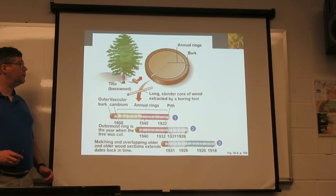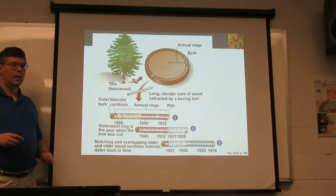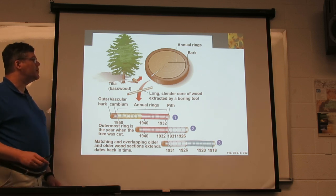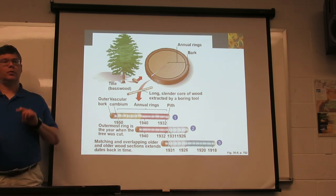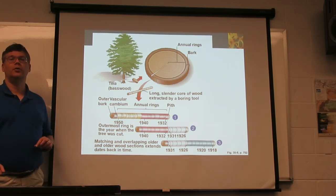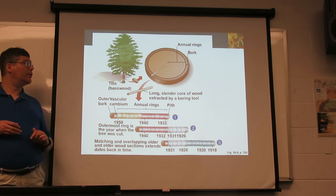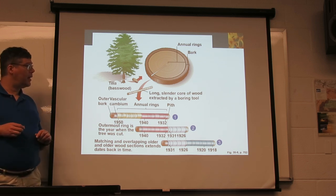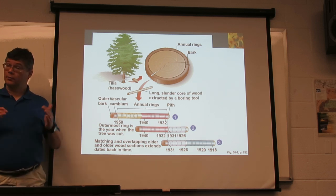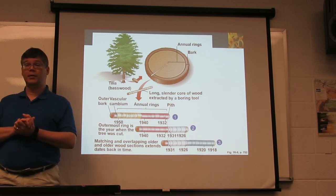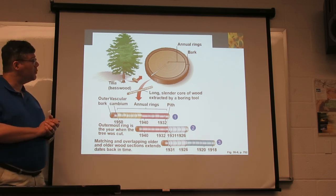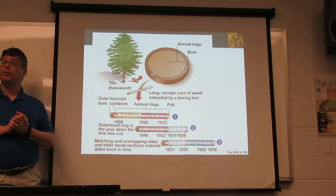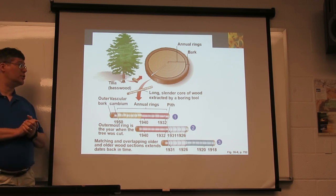Tree rings — we can see patterns. You can actually drill a little hole into a live tree to be able to count the rings. You don't have to cut it down. This will not only let you count the rings and get an age, but also tells you something about the history of conditions there.